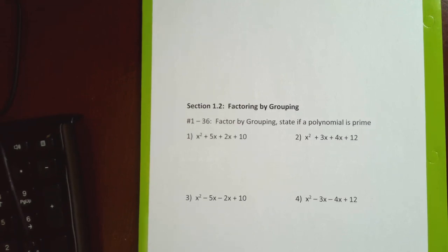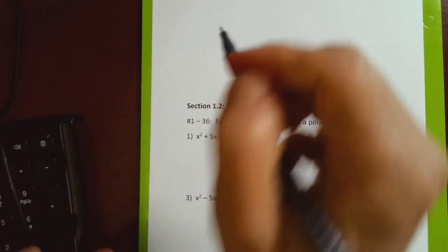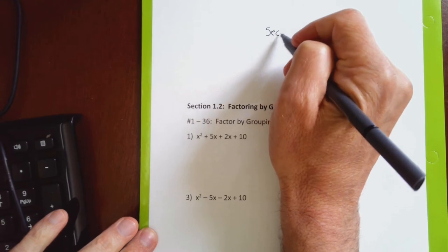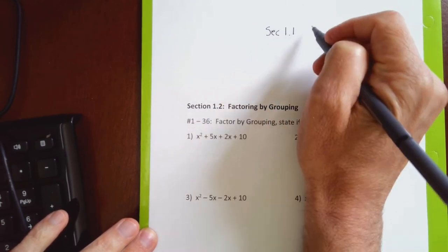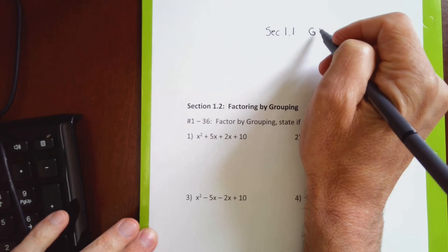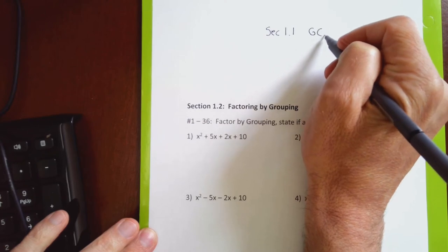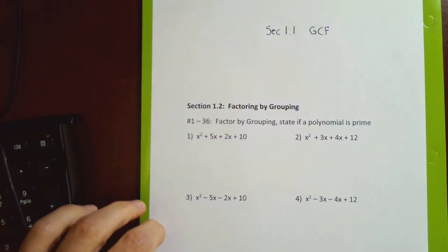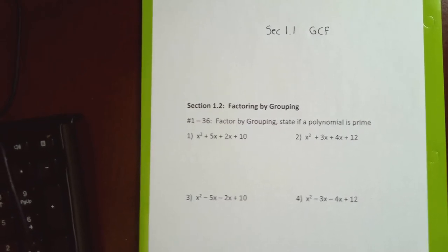As we go through the chapter we start learning different factoring techniques. Section 1.1 was factoring using the greatest common factor, and that technique is independent of the number of terms — whether a problem has two, three, four, or ten terms, greatest common factor factoring doesn't matter how many terms there are.